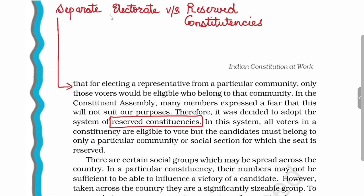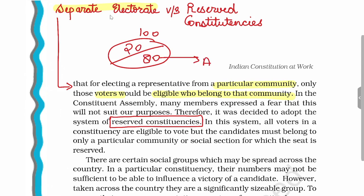In a separate electorate, when electing a representative from a political community, only those voters who belong to that particular community are eligible to vote. A candidate from a particular community can only stand for election, and only voters of that community are eligible to vote for that candidate. This kind of election system is called separate electorate.